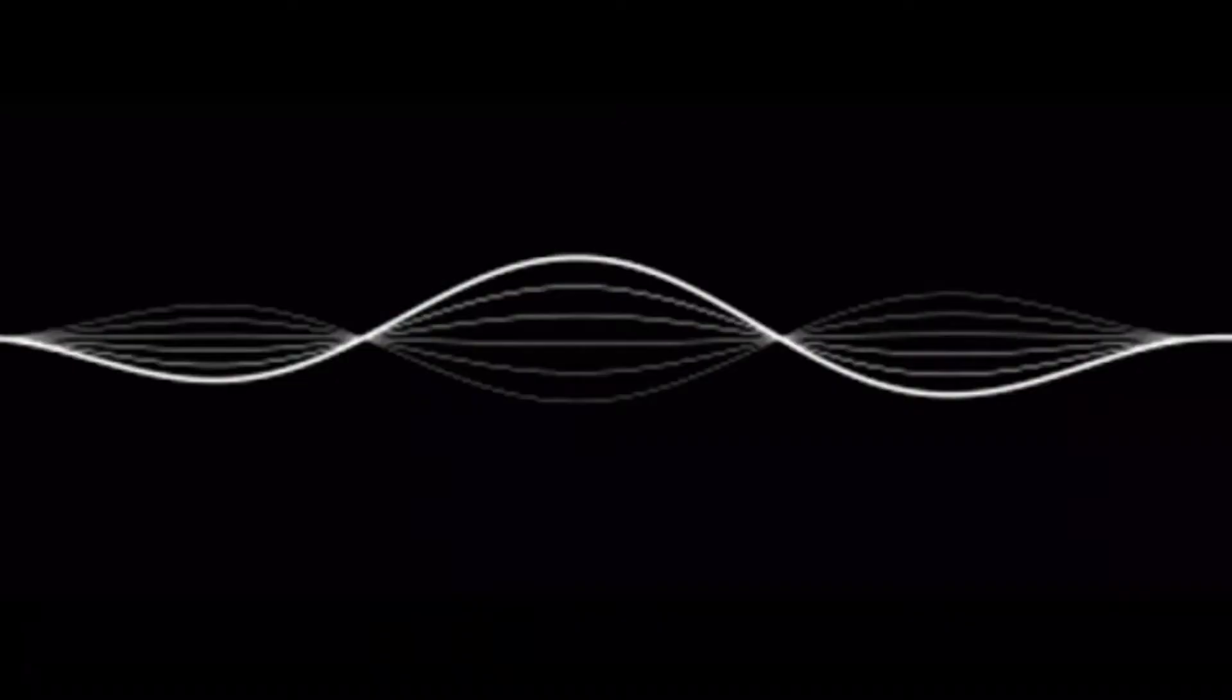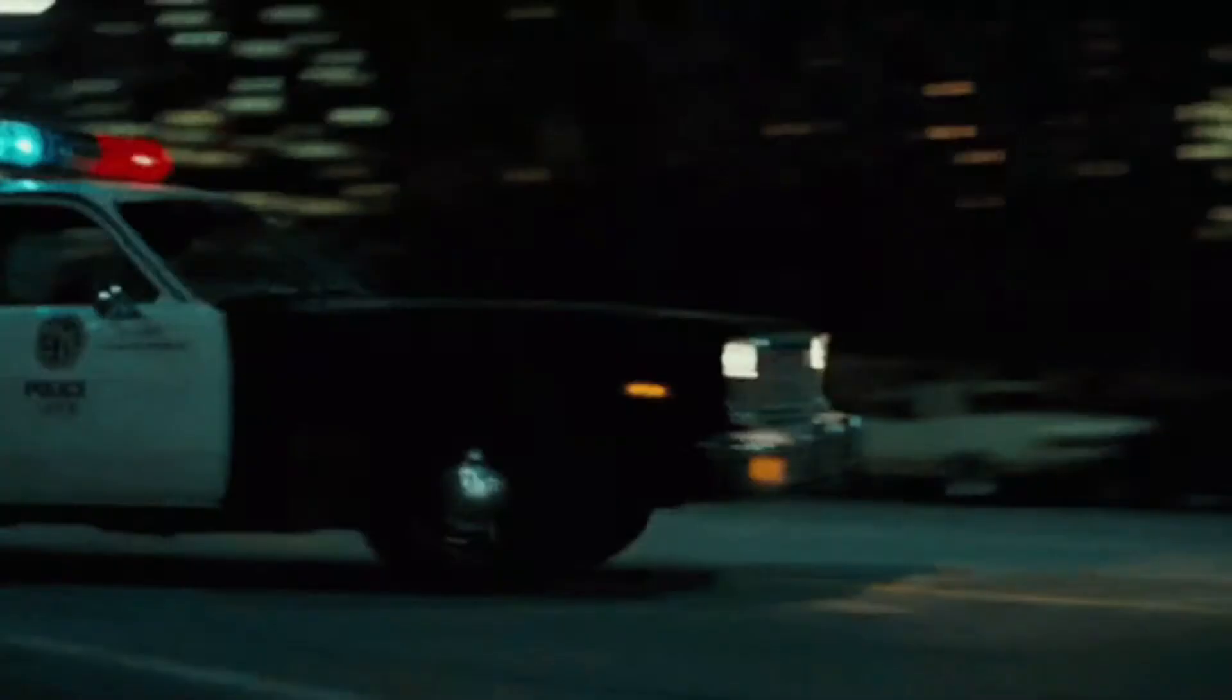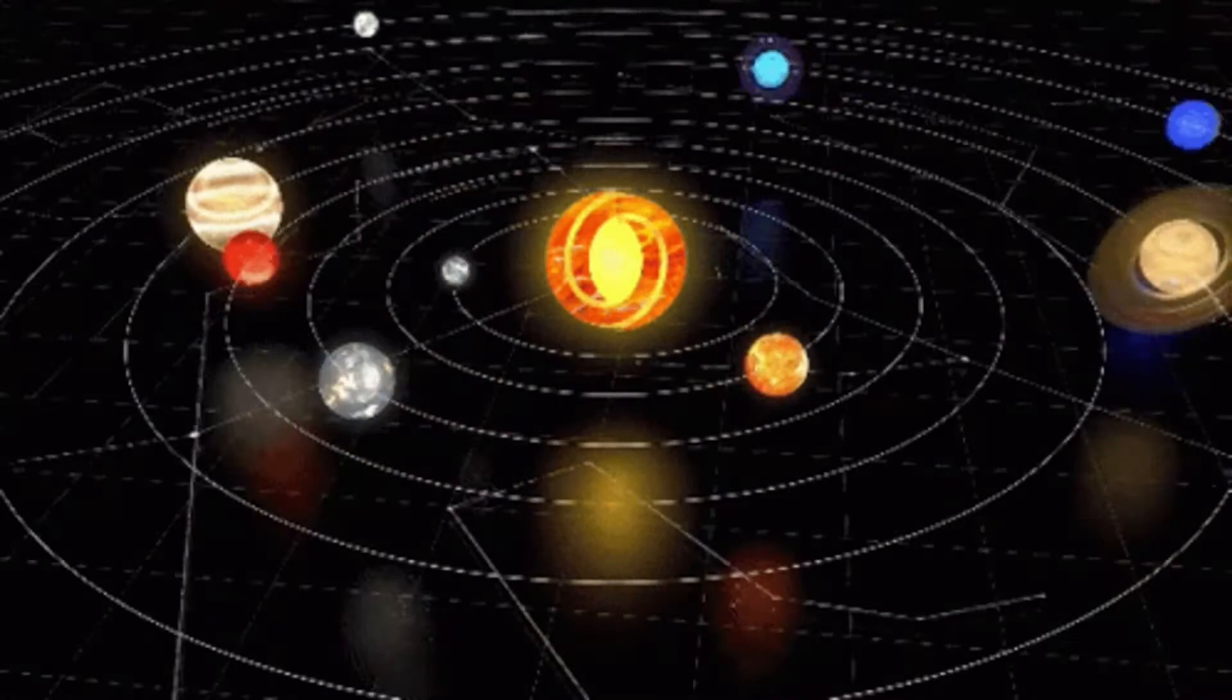In 1842, Austrian mathematician and physicist Christian Johan Doppler first proposed the theory of the Doppler effect. He learned that pitch, or frequency, of sound from a moving source varies as it moves towards or away from a stationary observer.